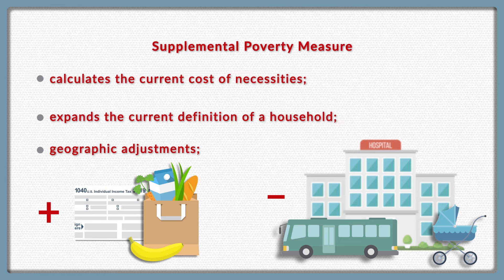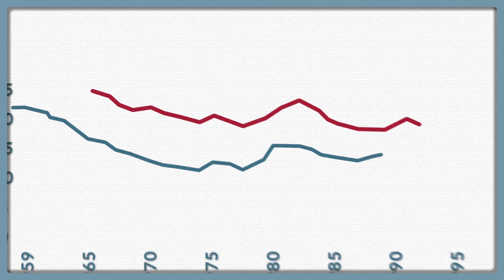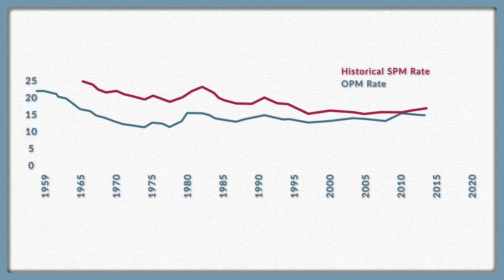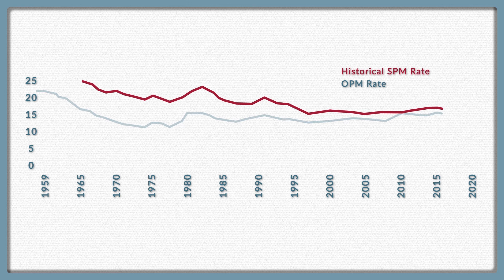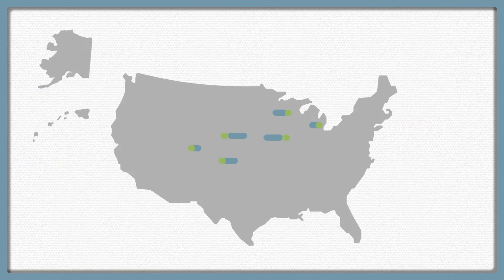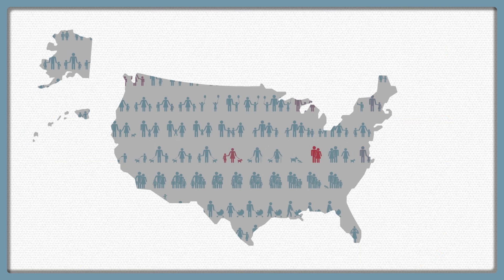Here's the official poverty measure line that we looked at before. And this red line represents a historical SPM developed by researchers at Columbia University, calculated back to 1967. The line for the Supplemental Poverty Measure starts much higher, but is now close to the line for the official poverty measure. Much of this shift reflects the success of our anti-poverty programs in helping to support families. But the official poverty measure is still useful in some ways — it gives us a consistent measure to track poverty over time, and it functions as a starting point for determining eligibility for many of our social programs.